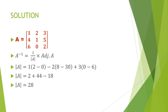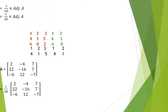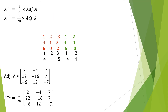Now we find the adjoint of matrix A. To find the adjoint, I work with the given matrix. Pay attention: these are the matrix elements in red — 1, 4, 6, 2, 1, 0, 3, 5, 2. These are the elements of the given matrix.